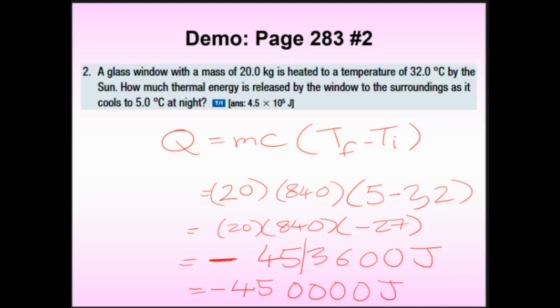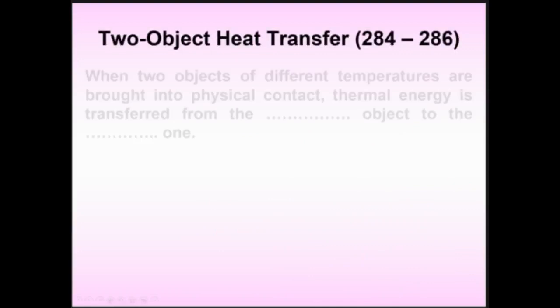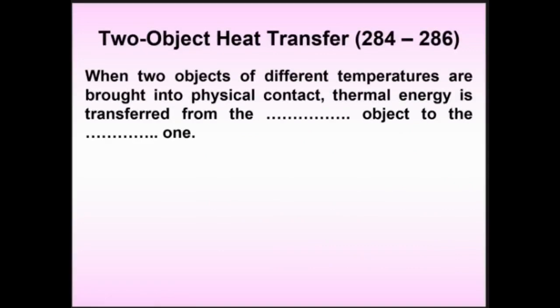So far we've only talked about one-object heat transfer — you either give an object energy or take energy away. Now let's talk about two-object heat transfer. Remind me: what are the three ways heat can be transferred? Conduction — if they physically touch. Convection — if there's a medium like liquid or gas between them without direct contact. Radiation — electromagnetic waves, works even through a pure vacuum.